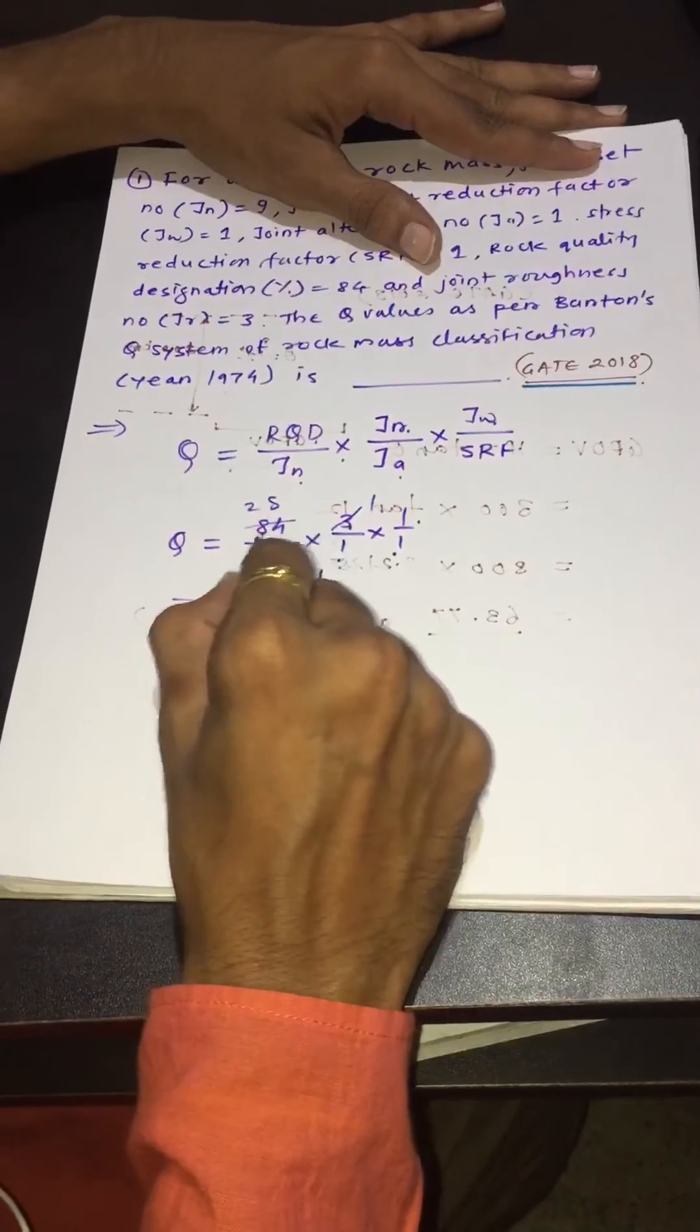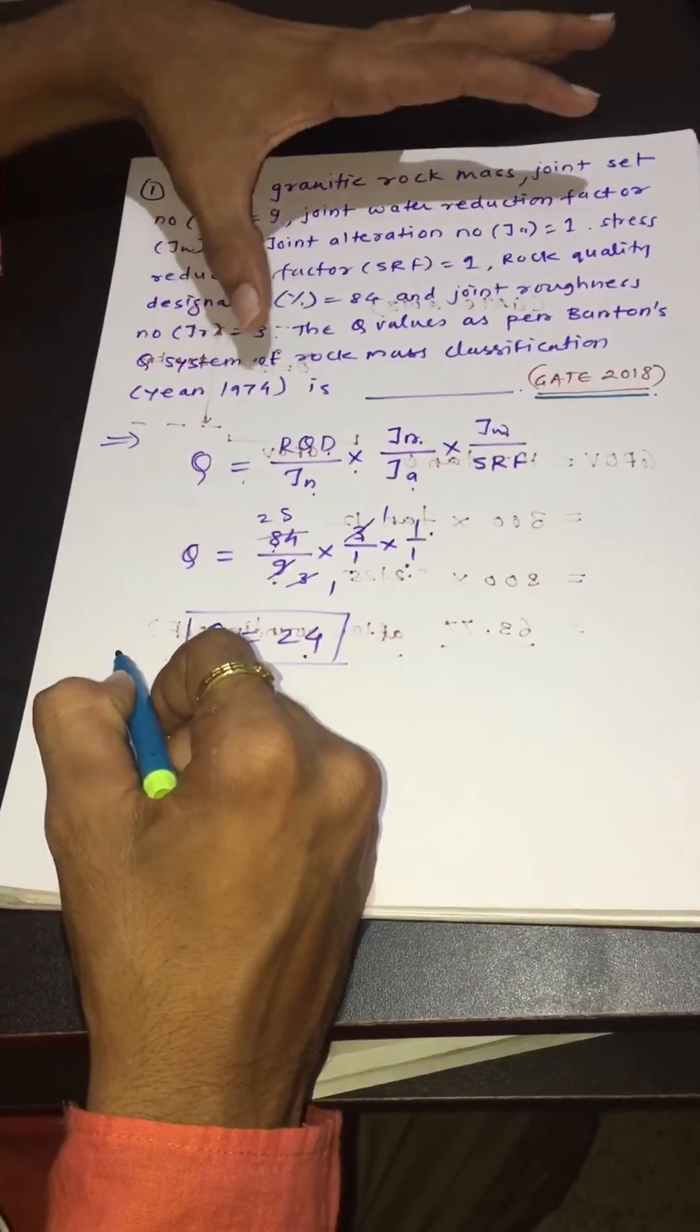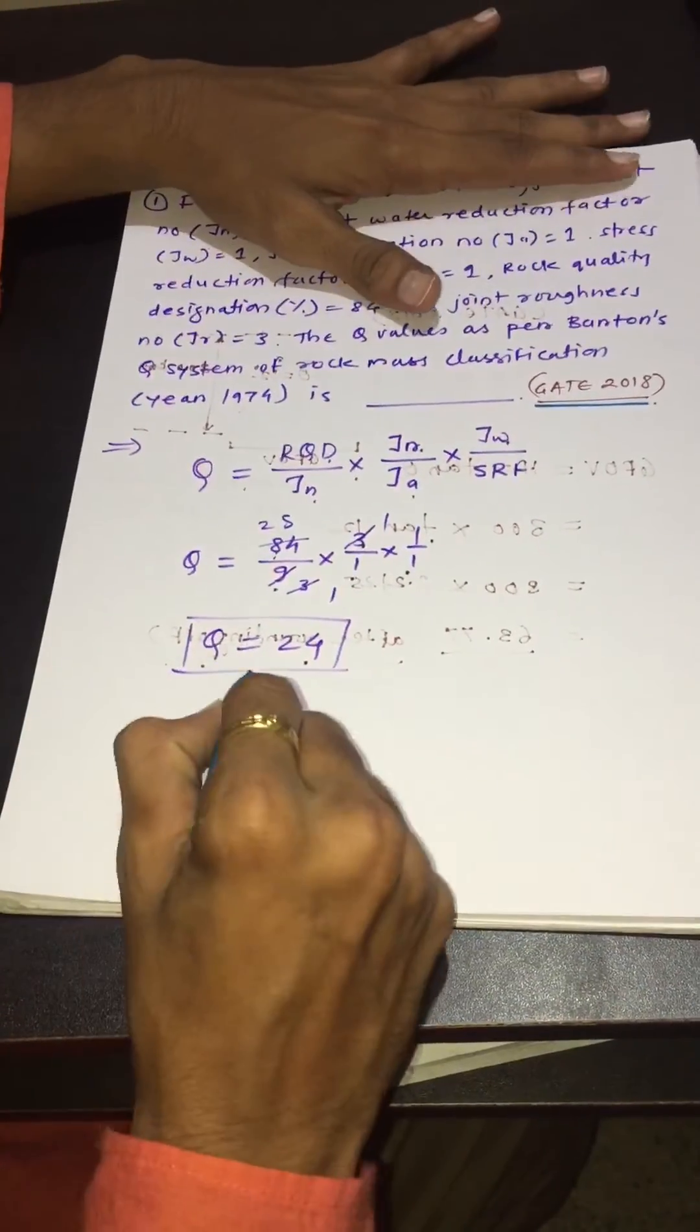After calculating we get Q value is 24. So, the Q value as per Barton Q system of rock mass classification is 24.